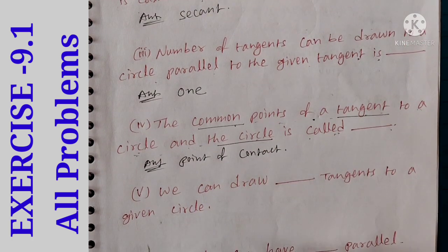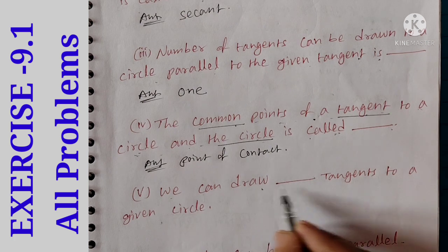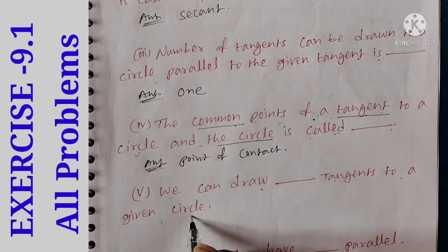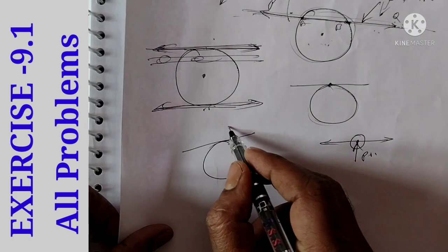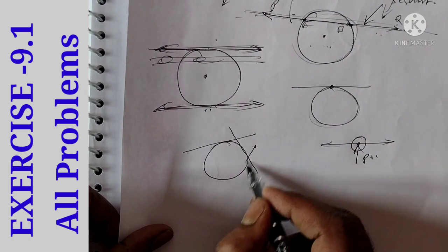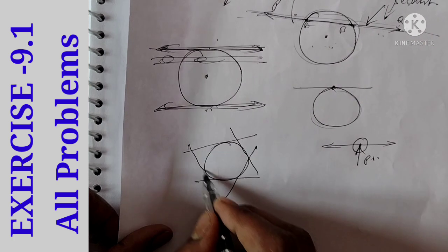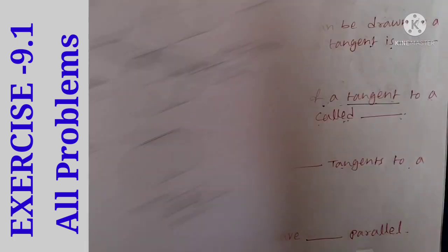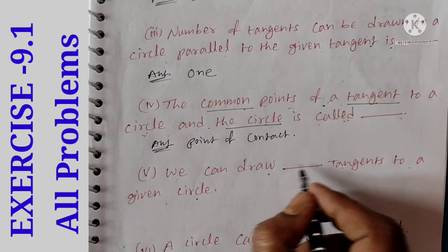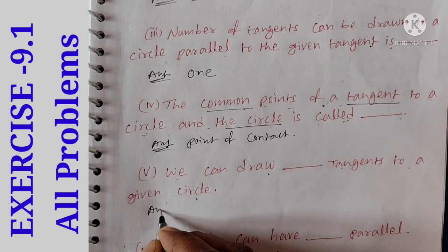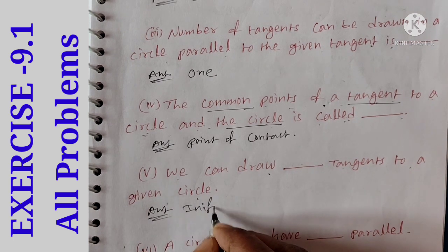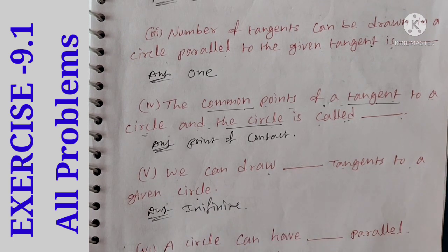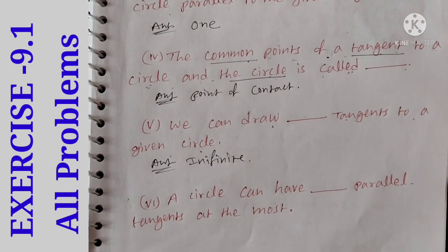Fifth point: we can draw dash tangents to a given circle. We can draw any tangents to a given circle. The answer is infinite — we can draw infinite tangents.